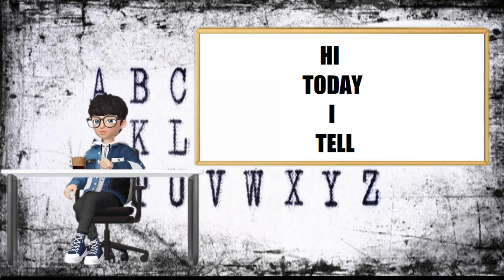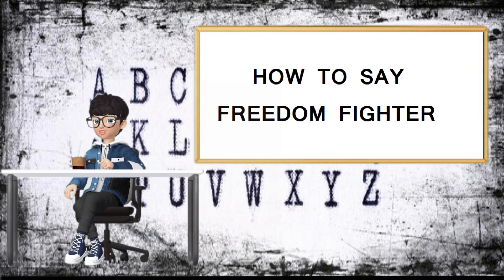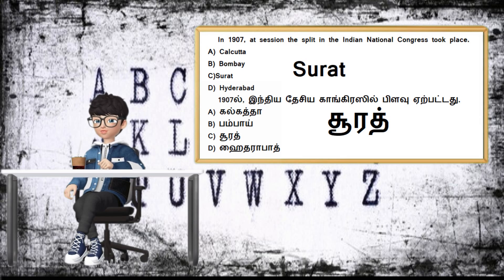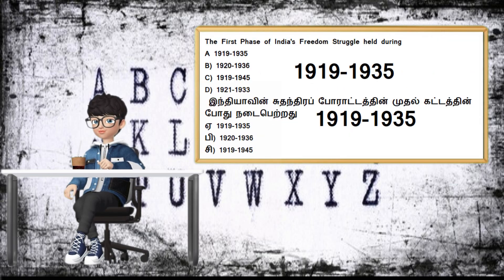How it is today, I tell the freedom movement. In 1907, at the Surat session, the split in the Indian National Congress took place at Surat. The first phase of India's freedom struggle held during.